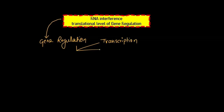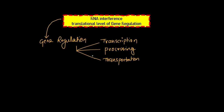your processing level, your transportation level, and your translation level. So there are different levels of gene regulation, and RNA interference is a gene regulation at the translational level.